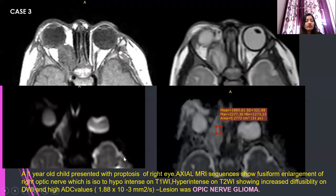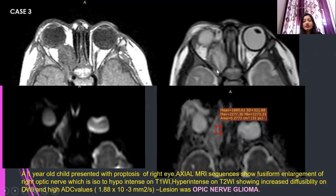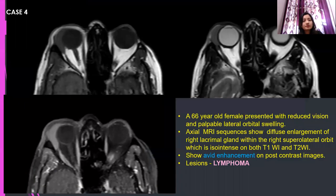Case 3: a 4-year-old child presented with proptosis of the right eye. Axial MR sequences show fusiform enlargement of the right optic nerve, which is isointense on T1 and hyperintense on T2, showing increased diffusibility and high ADC value with a mean of 1.88 × 10⁻³ mm²/s. The lesion was an optic nerve glioma.